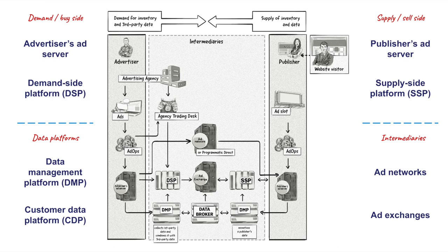An ad network is a technology platform that serves as a broker between a group of publishers and a group of advertisers. Ad networks were first introduced in the mid-90s to help publishers sell their available ad inventory and help advertisers scale their digital ad campaigns across many different sites without having to deal with each publisher directly. Ad networks aggregate unsold inventory from publishers and offer advertisers a consolidated and generally less expensive pool of impressions on a cost-per-milli, or CPM, basis. Many ad networks nowadays also offer access to premium inventory, which is essentially ad space located in high-traffic areas of a website, such as at the top of a homepage.